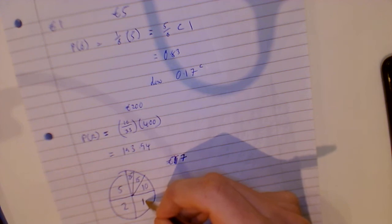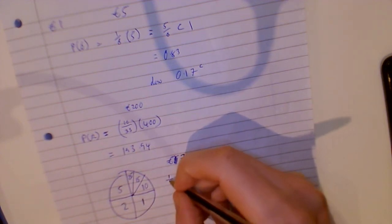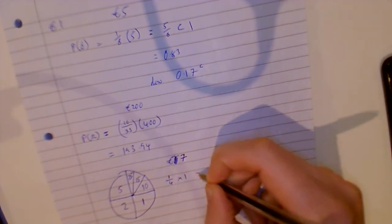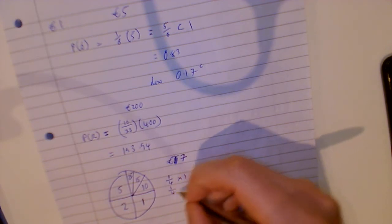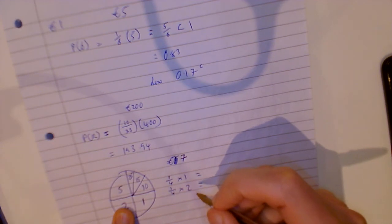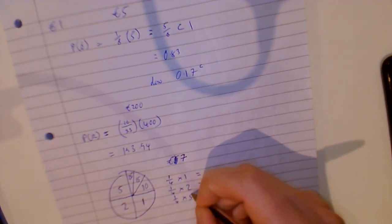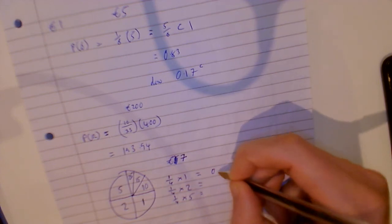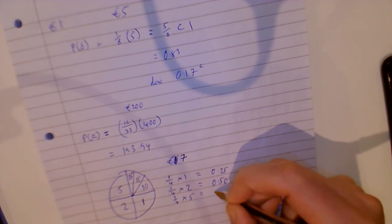This one here, that is one quarter, so it's one quarter multiplied by one. This one is one quarter multiplied by two - it's the probability by the payout. This one's one quarter by five. So that's 0.25, that's 0.5, that is 1.25.